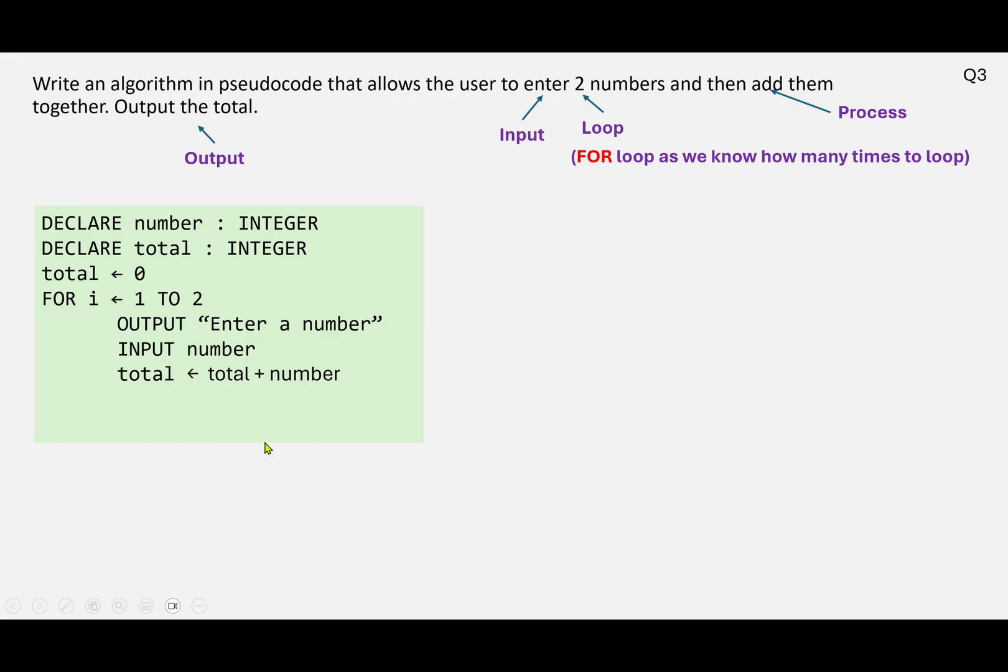Last thing to do is, so we've done our processing, is to finish our loop structure and have next i. So i is just our loop variable in this case.